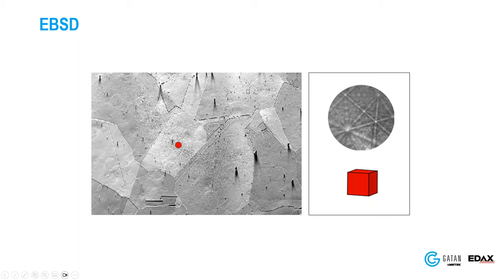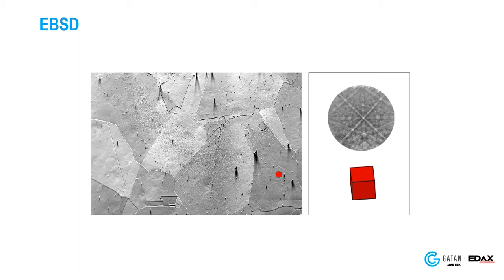With the EBSD pattern, you move the electron beam in the SEM to a point of interest, to a grain of interest, and you can see the pattern produced at that point. From that pattern you can deduce the orientation and the crystal structure. If I move the beam to a new point, I get a new orientation and the pattern changes accordingly. You can see the pattern changing as you move the beam around, due to the change in orientation of the crystals at those points.